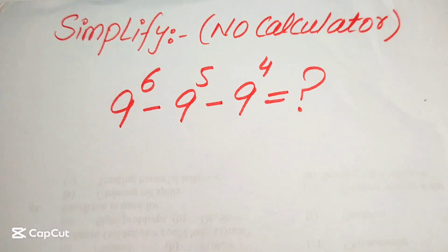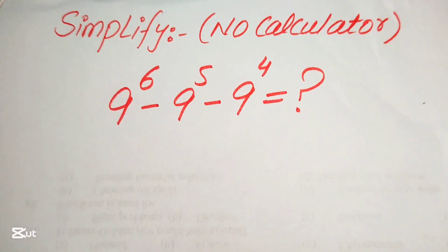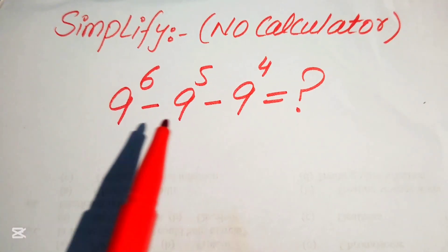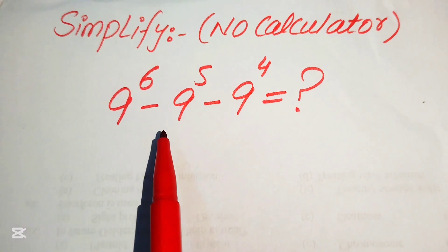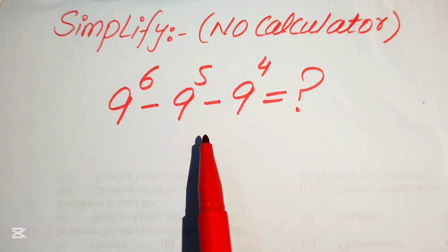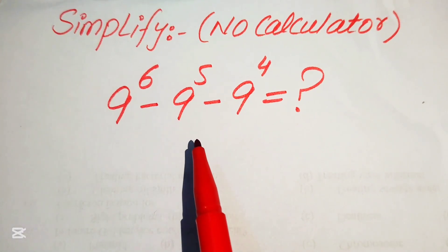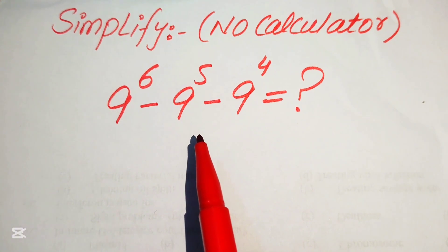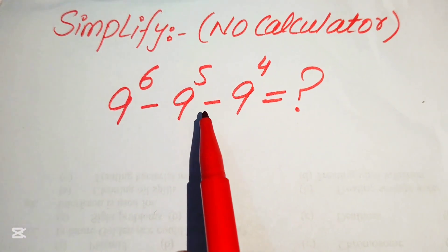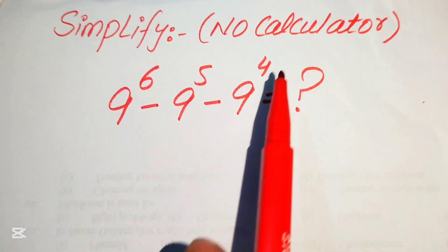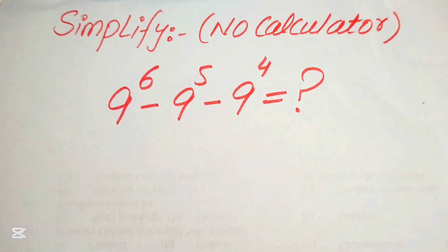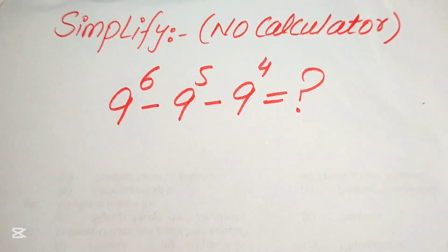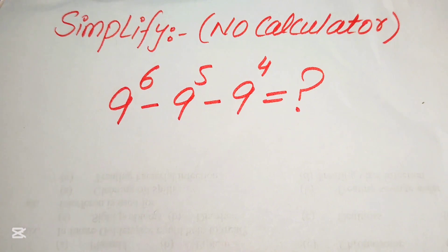Everyone, let's simplify this algebraic expression. We have 9 to the power of 6 minus 9 to the power of 5 minus 9 to the power of 4, and we want to write this in simplified form. Note that a calculator is not allowed in this problem, so we will solve it without a calculator and show all of the working on paper.